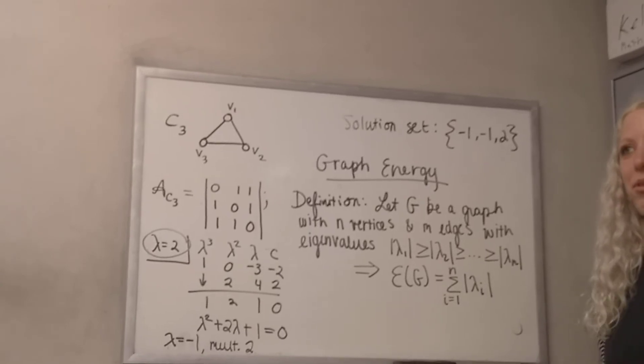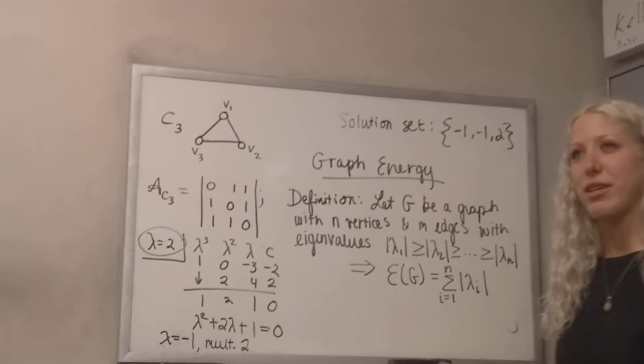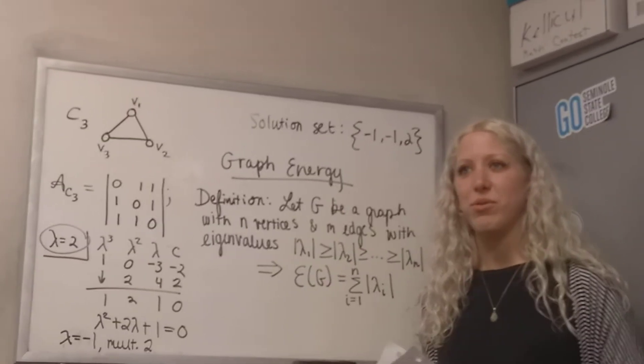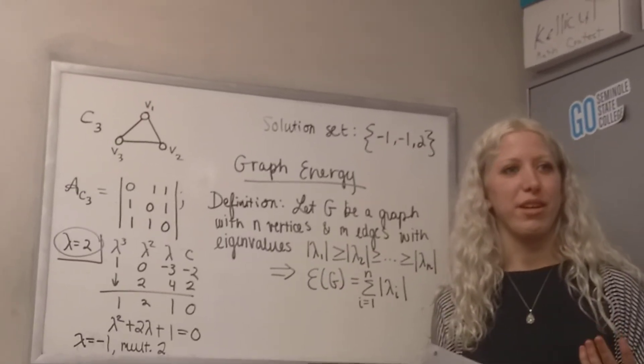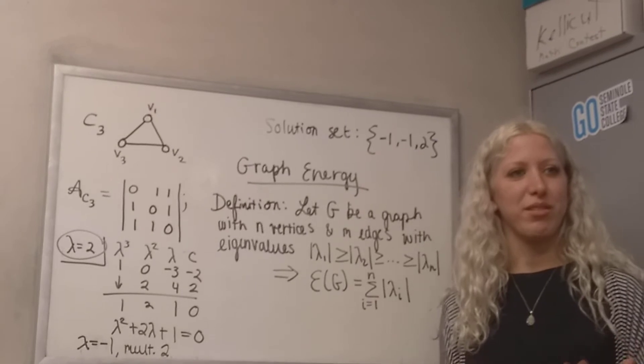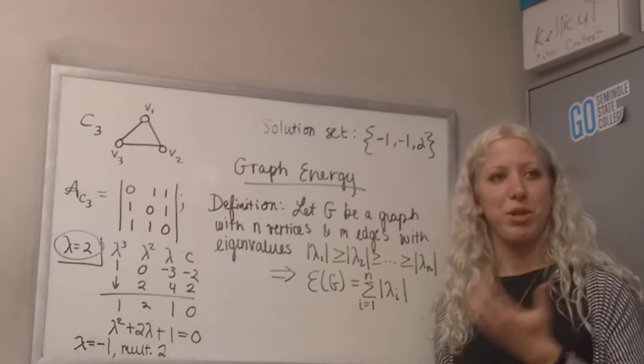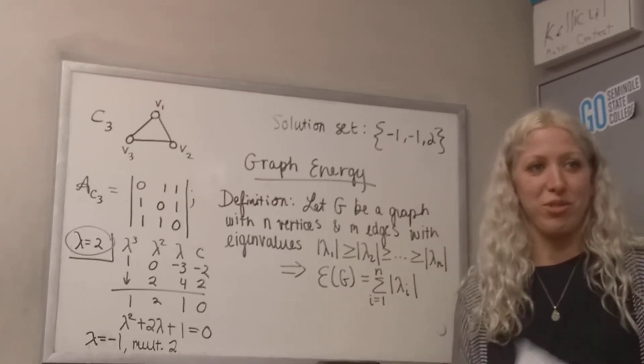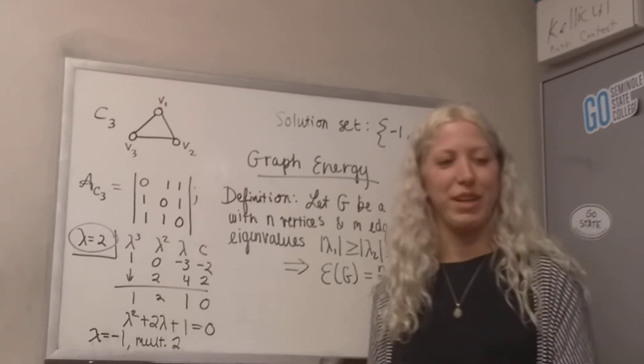I remember hearing about it and kind of thinking, more intuitively, what does that tell us? Because this is from such a pure math standpoint — it's just the sum of absolute value of the eigenvalues.